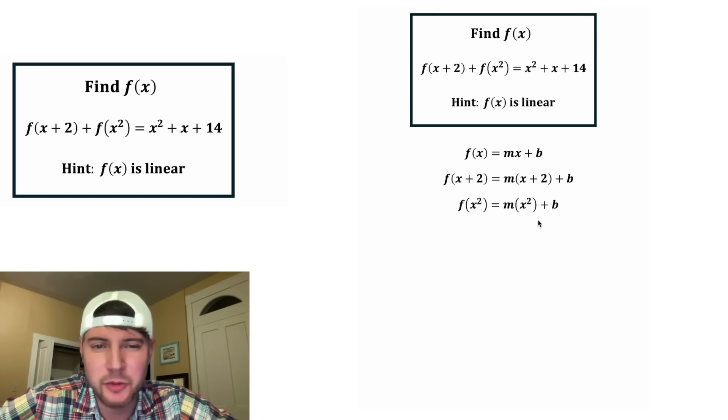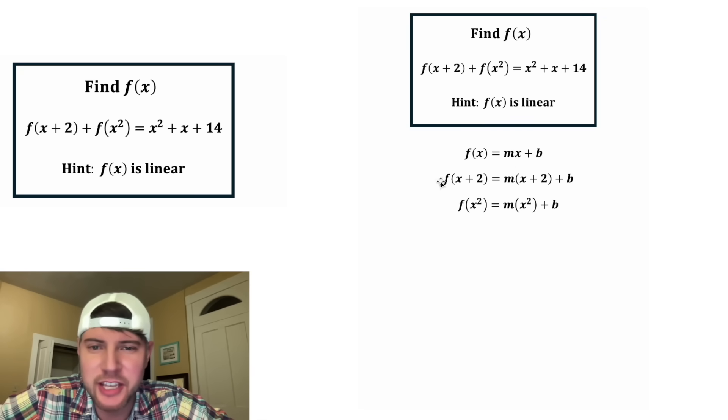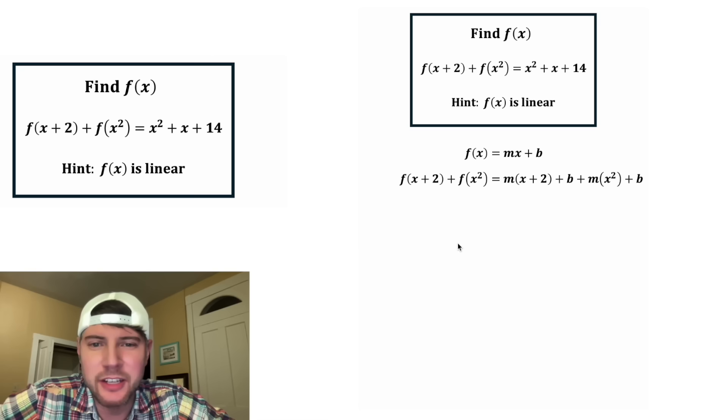That'll give us mx squared plus b. Now the original question gave us f of x plus 2 plus f of x squared. So let's add these two rows together. It'll give us f of x plus 2 plus f of x squared, which is what we have up here, equal to all of this.